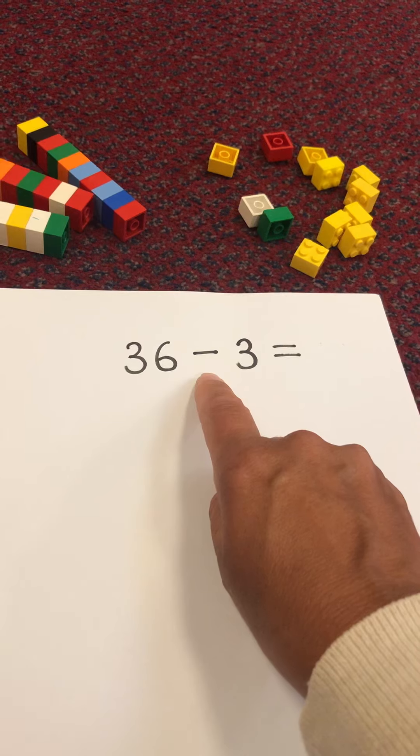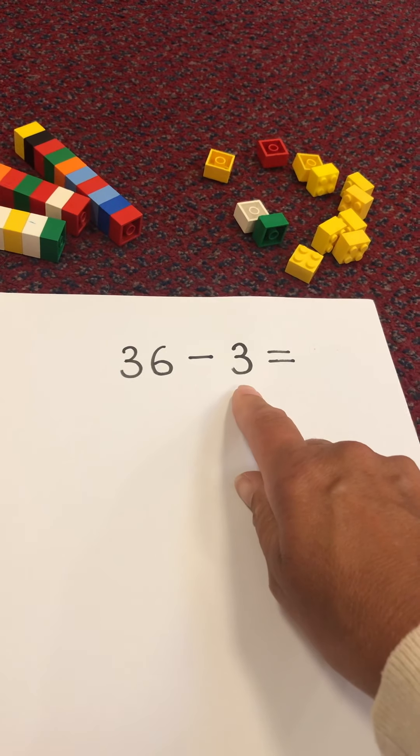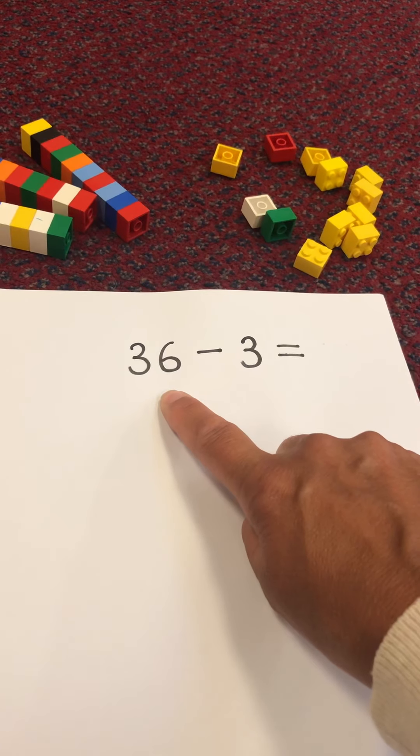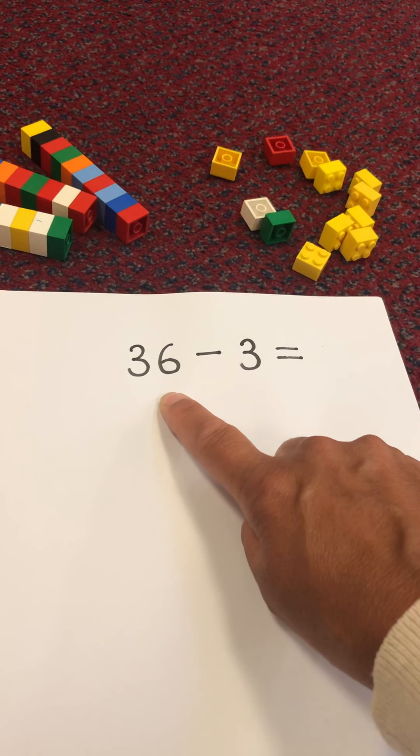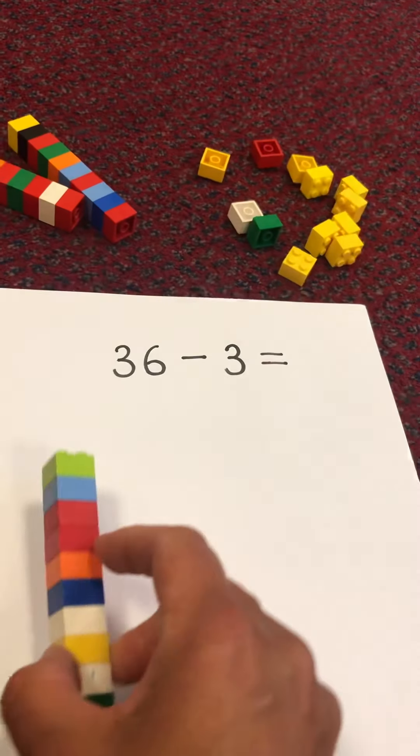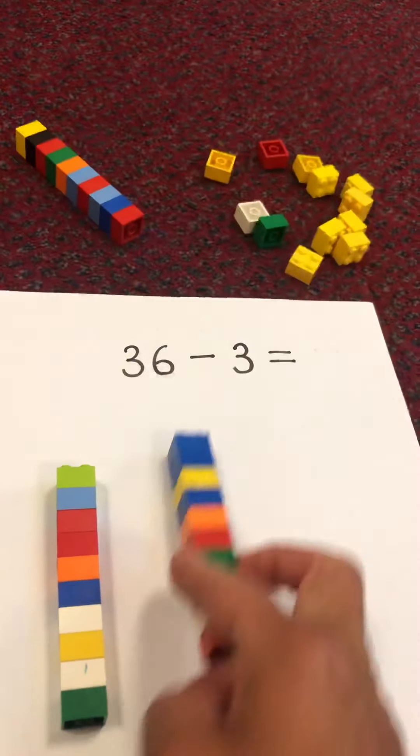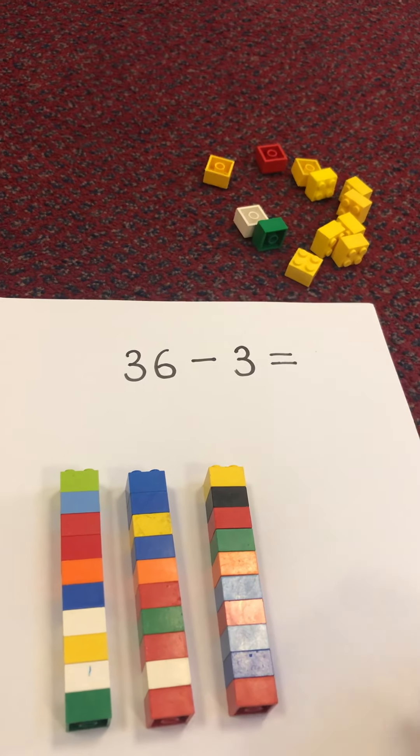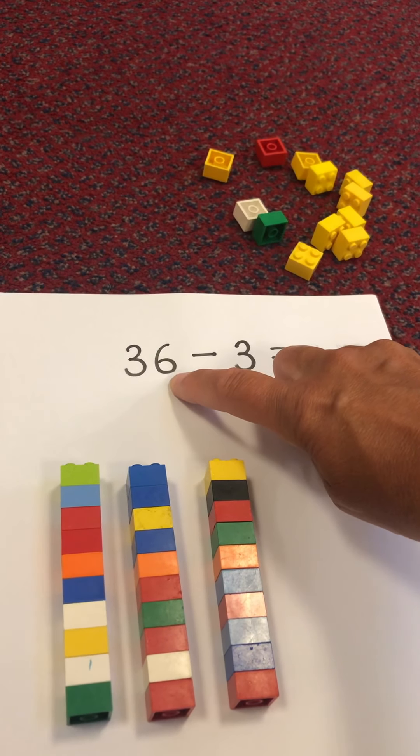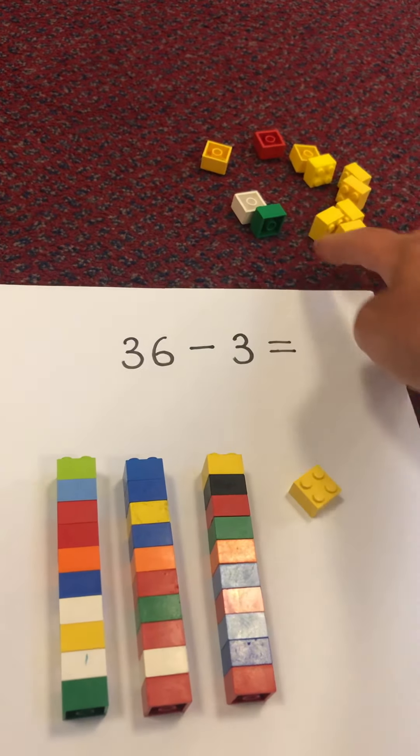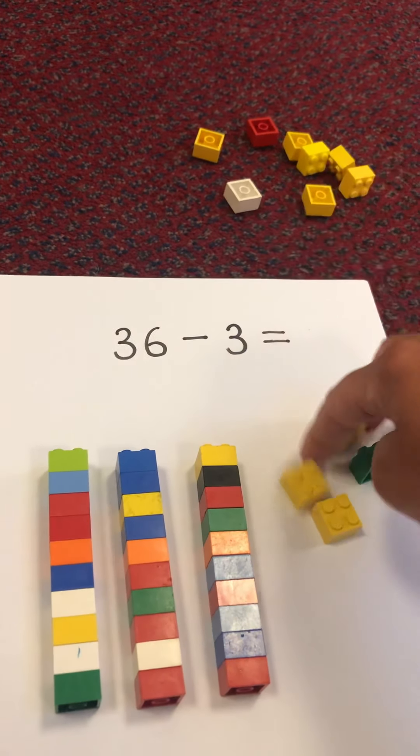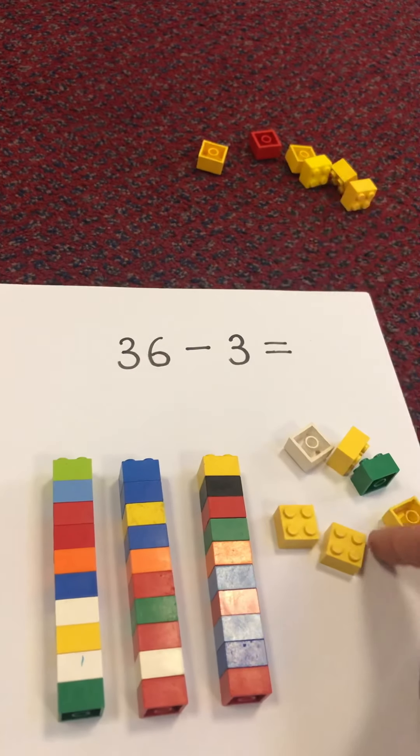36 take away 3. So our first number we need to get out is 36. How many lots of ten? Well done. Ten, twenty, thirty. Three lots of ten. How many ones? That's right, six. One, two, three, four, five, six.